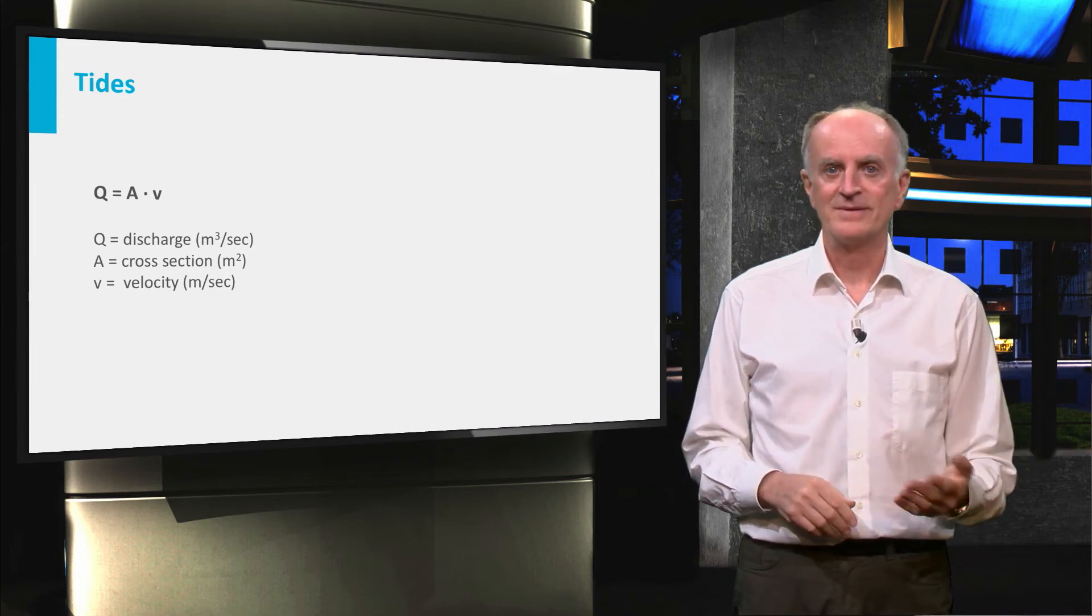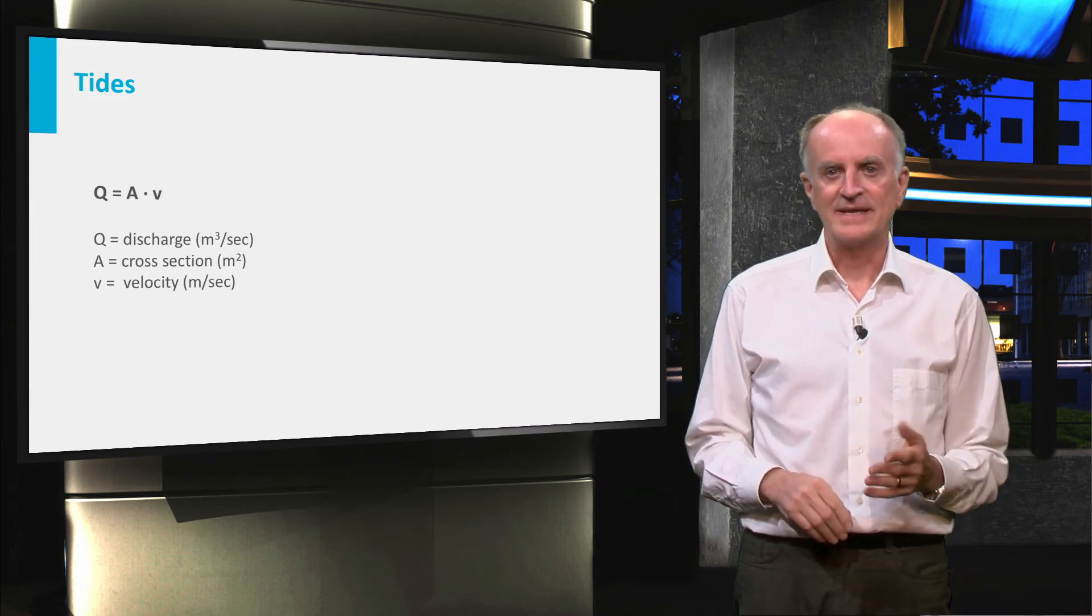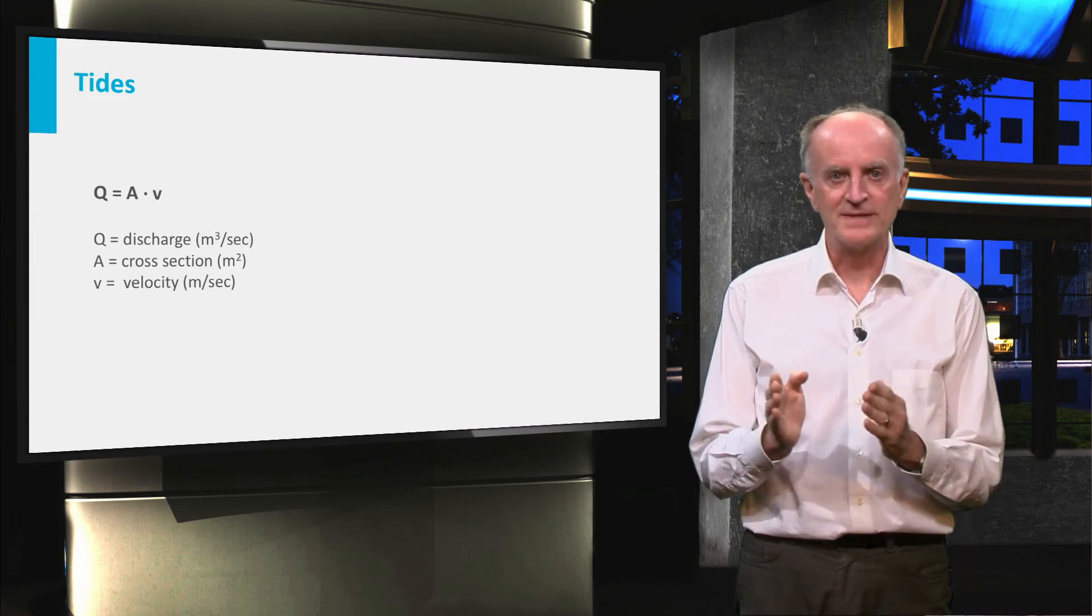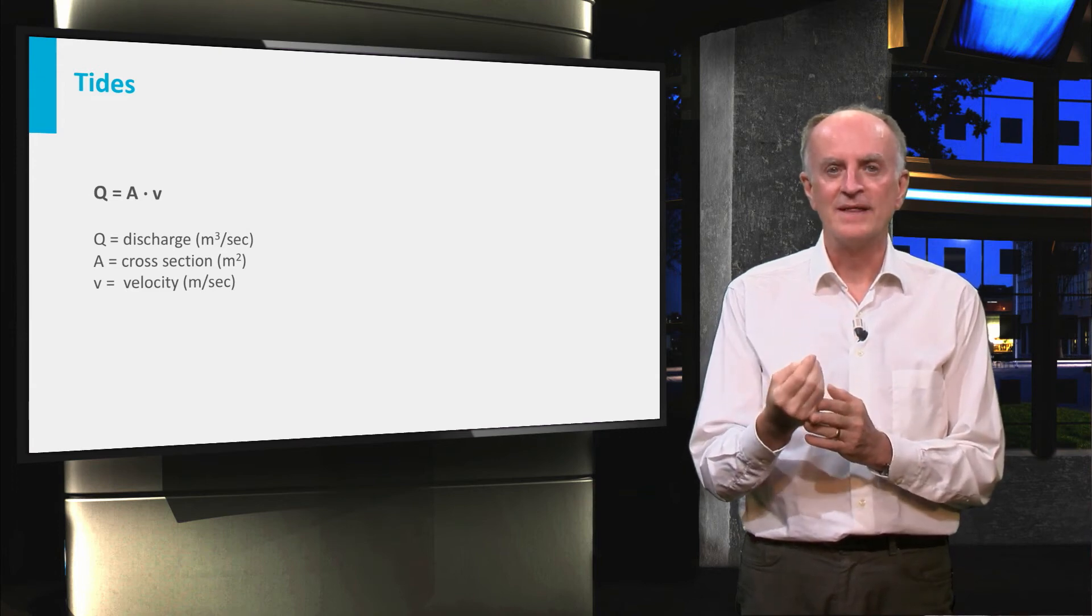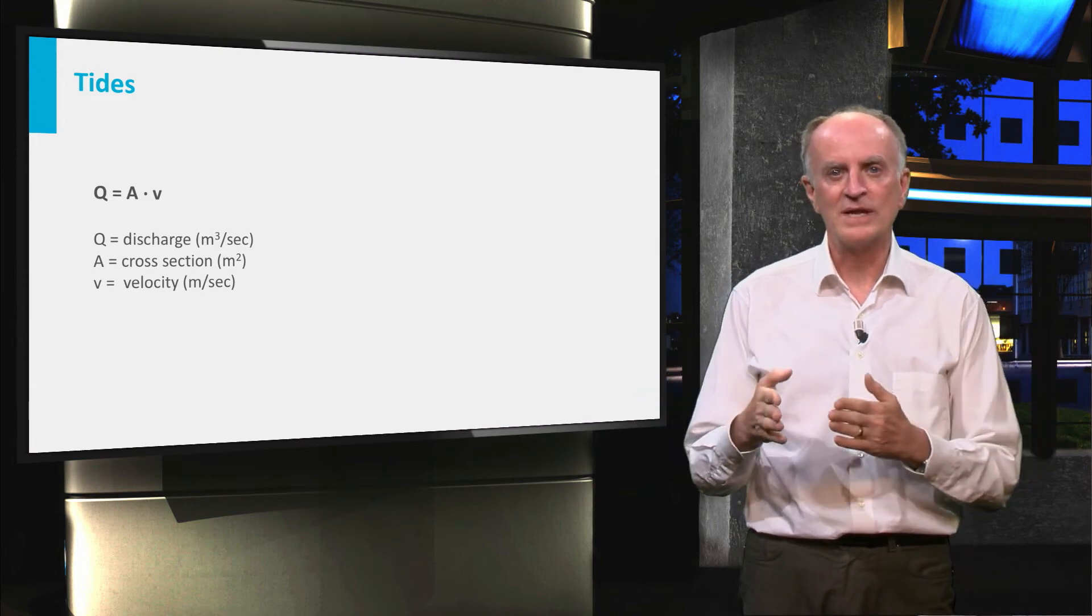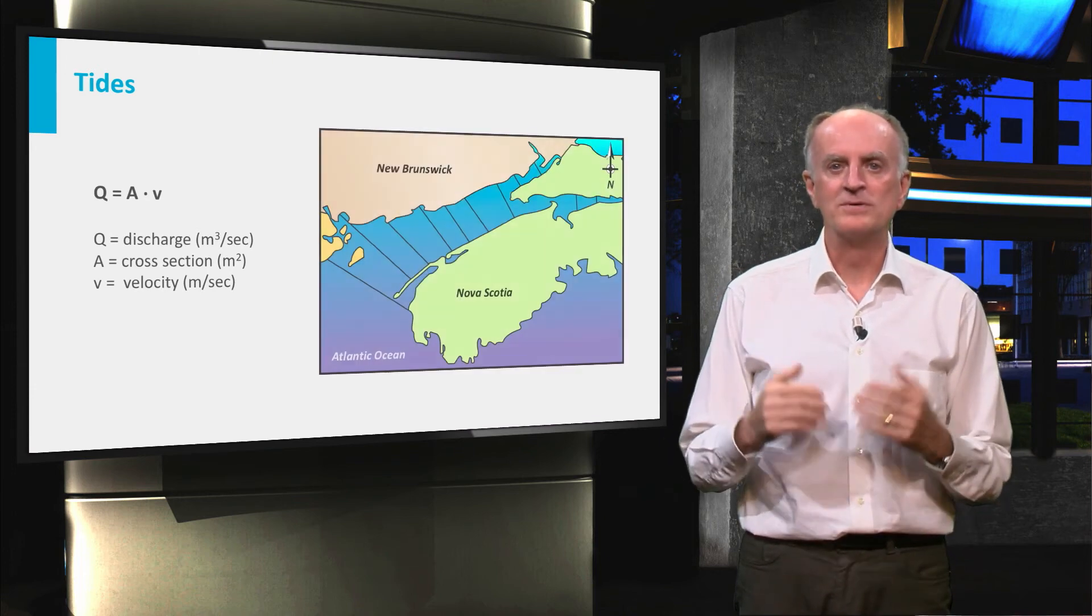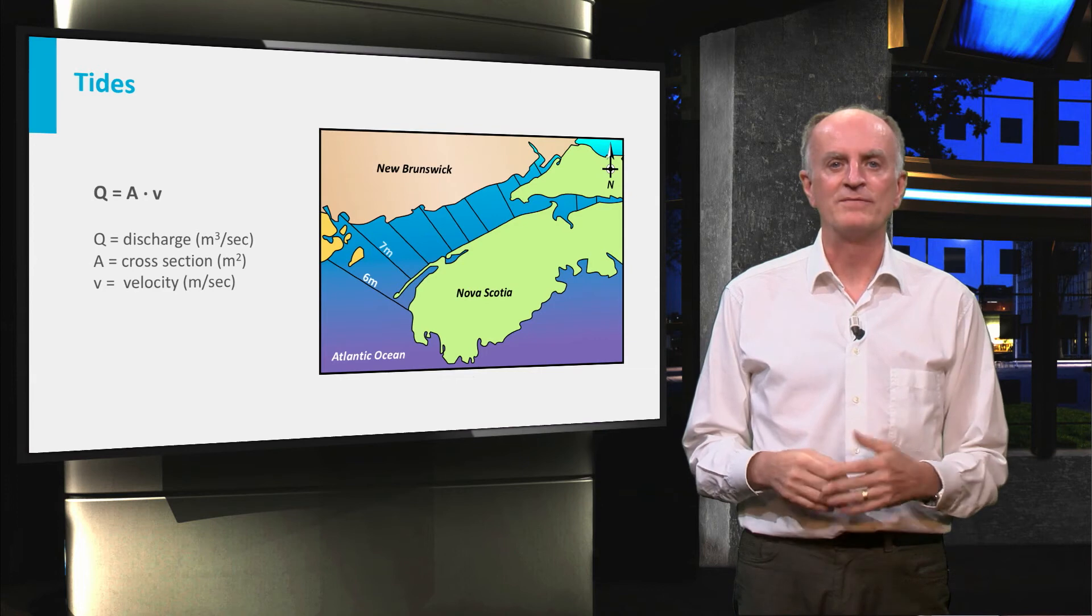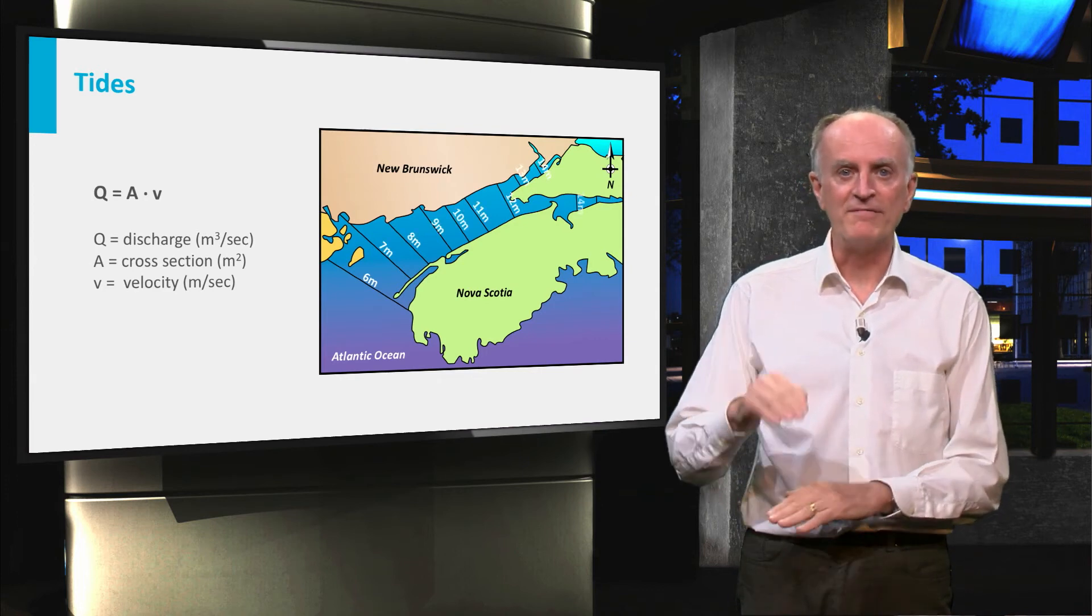Remember this equation? We've discussed this while talking about river flow. It says that if the width of the section decreases and the discharge remains constant or increases, then water velocity will increase and water level will become higher. The most apparent example is observed in Newfoundland, the place with the largest tides on Earth, more than 15 meters.